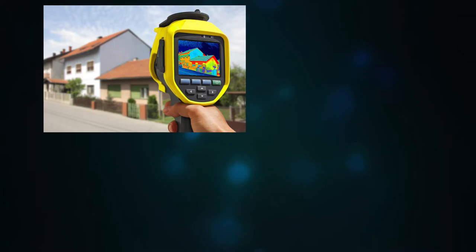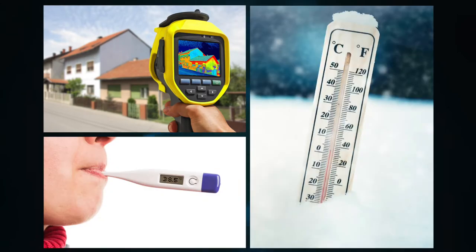Well, using changes in one physical property to indicate another is normal in the world of measurement. Different types of thermometer can measure changes in light, electricity and lengths to indicate changes in temperature.